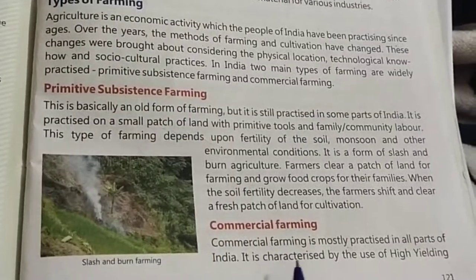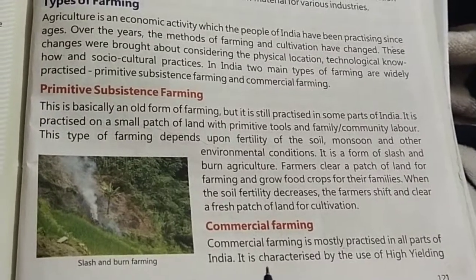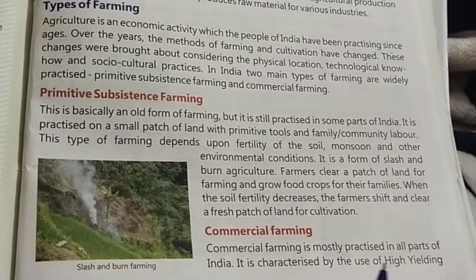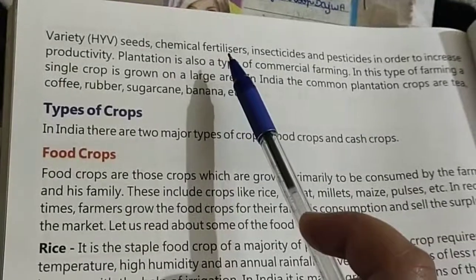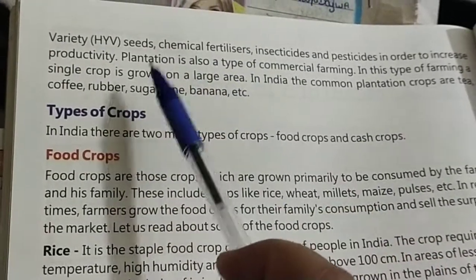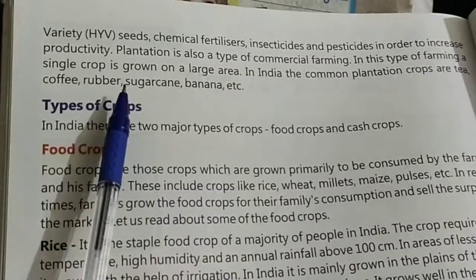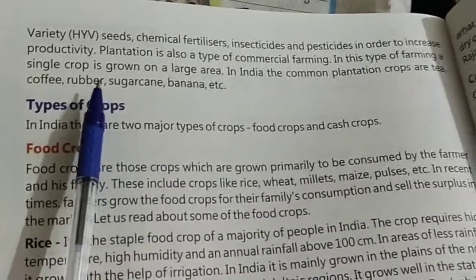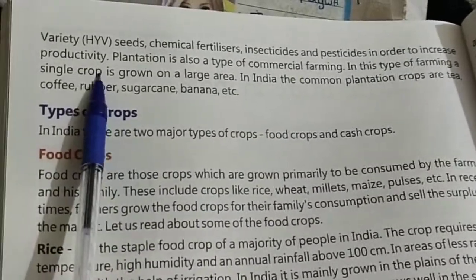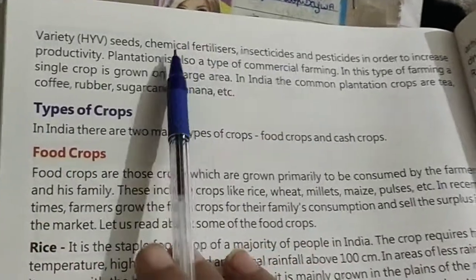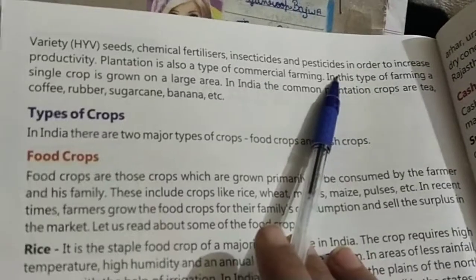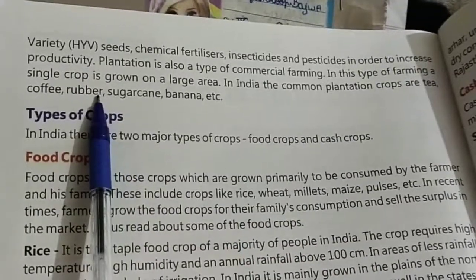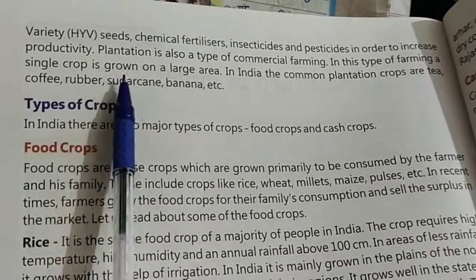Commercial farming is characterized by the use of high-yielding variety seeds. In this farming, we use chemical fertilizers, insecticides, and pesticides in order to increase the productivity of the crops.